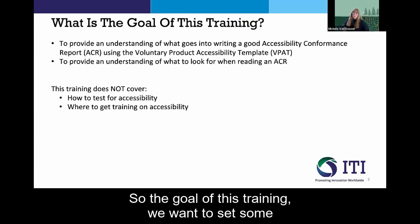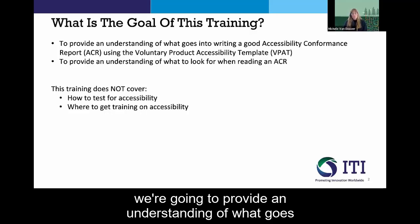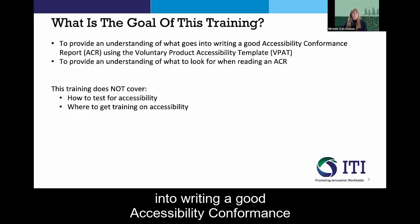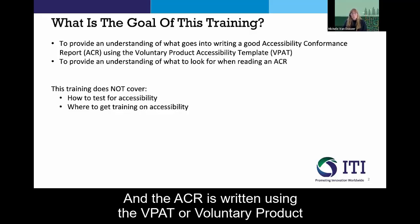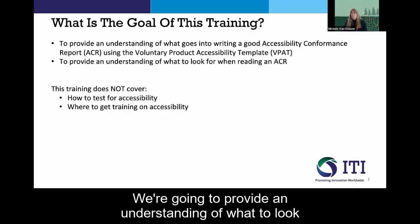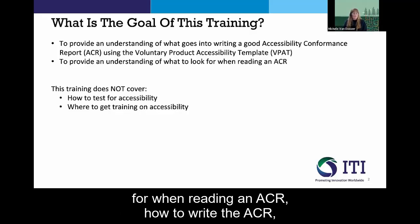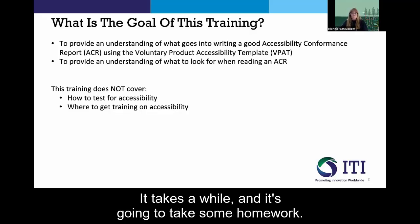The goal of this training is to set some expectations about what we're going to be doing. We're going to provide an understanding of what goes into writing a good Accessibility Conformance Report, or ACR. The ACR is written using the VPAT — the Voluntary Product Accessibility Template. We'll cover what to look for when reading an ACR and how to write one. It's not a simple document to create; it takes a while and some homework.